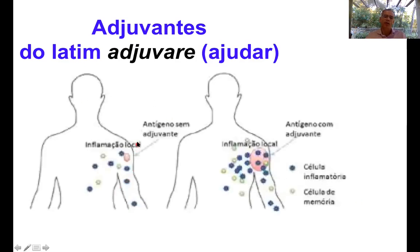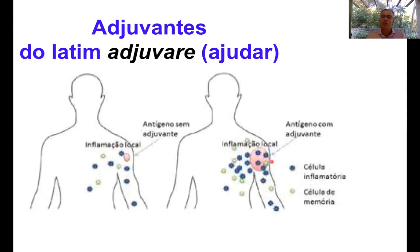Veja que, nesse lado, é uma representação de uma pessoa vacinada com uma vacina que não tem adjuvante, e ela gerou uma certa resposta imune. Quando há presença de adjuvante nessa vacina, a resposta imune é muito mais acentuada, muito mais forte. Os adjuvantes causam uma reação inflamatória no local, muitas vezes induzem febre, atraem células para o local da vacina — isso é considerado positivo nesse contexto. Diversos adjuvantes têm sido testados, mas para o uso humano o adjuvante mais comum são os géis de hidróxido de alumínio.